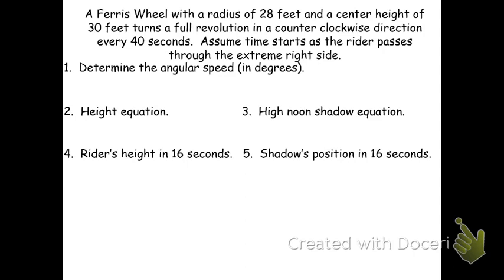Here's an example: a ferris wheel with a radius of 28 feet, a center height of 30 feet, that turns a full revolution counterclockwise every 40 seconds, starting at the extreme right-hand position. We first find the angular speed in degrees: b = 360° ÷ 40 seconds = 9 degrees per second.